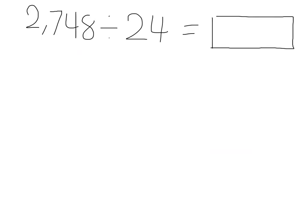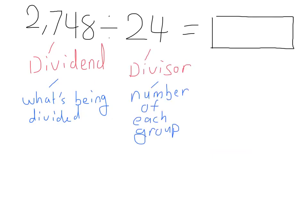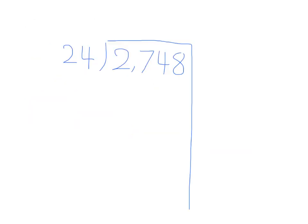So, 2,748, the dividend, is always what is being divided. The divisor, 24, is the number of each group. And the quotient, the answer, is the size of each group. We are going to solve this problem by using the partial quotients algorithm.